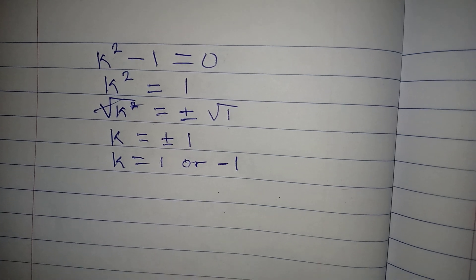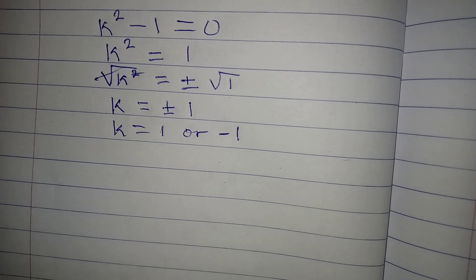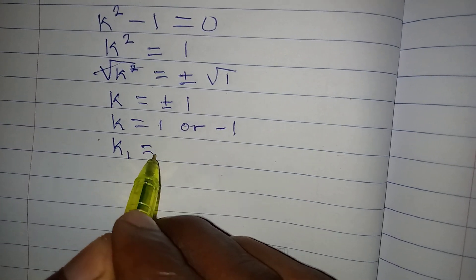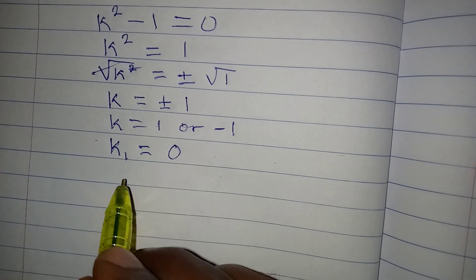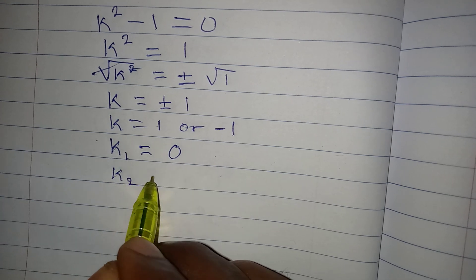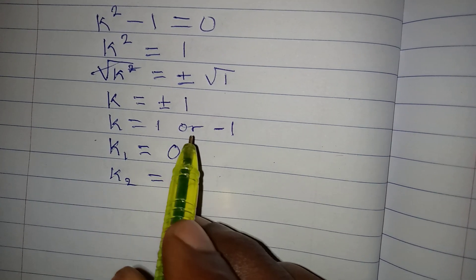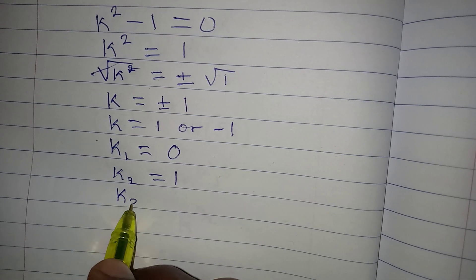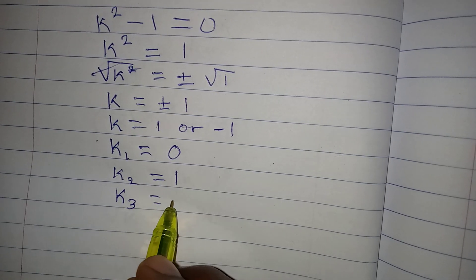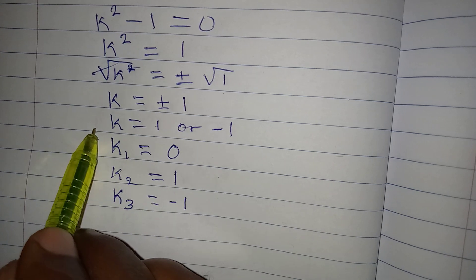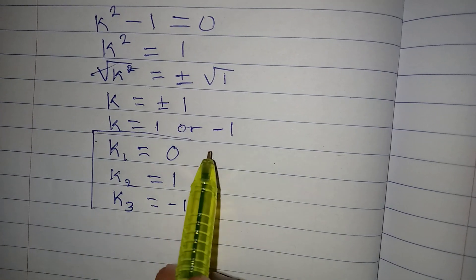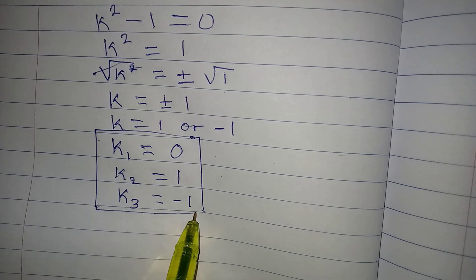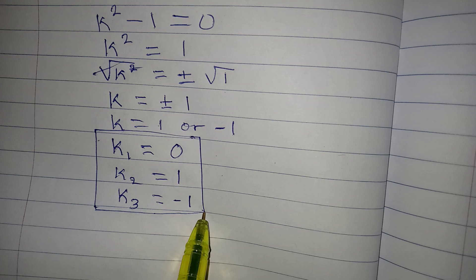We now have three solutions: k₁ equals zero, k₂ equals positive one, and k₃ equals negative one. However, only two of them satisfy the original equation. Let's go back and verify each solution.